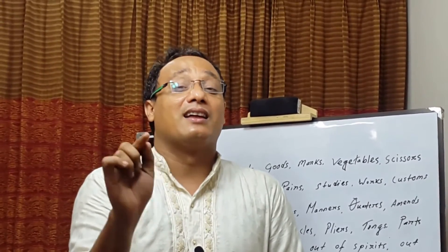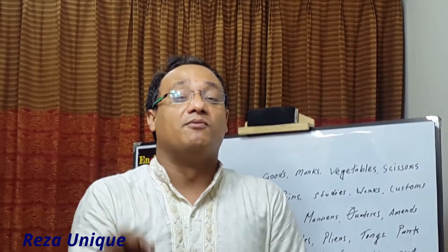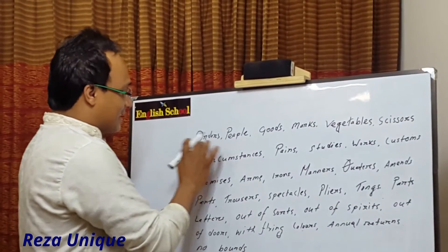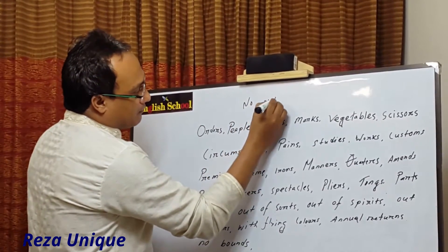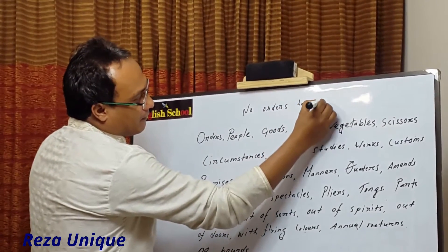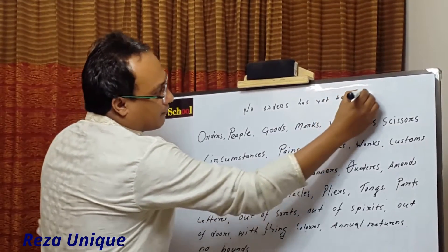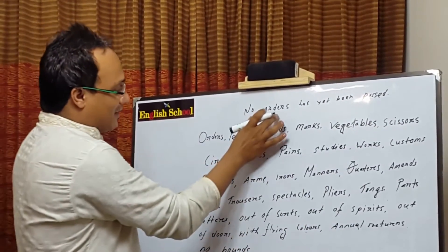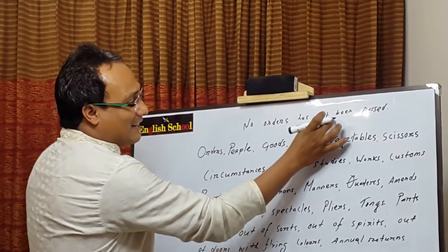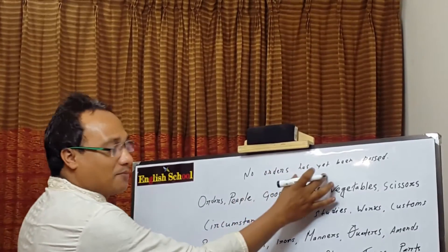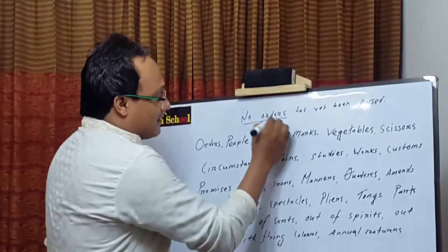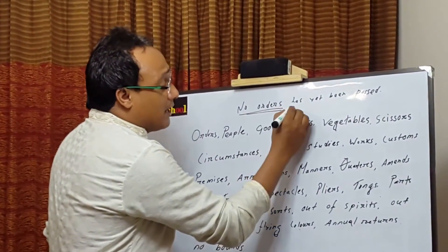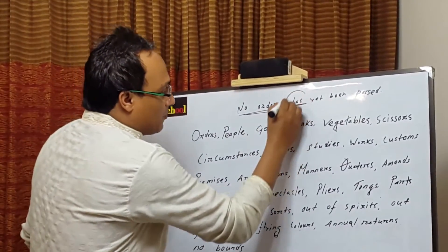When we consider something as a plural noun, we have to use the plural form of the verb. Follow here — the first one is 'orders.' If we go through an example: 'No orders has yet been passed.' We usually make this kind of mistake — we consider 'no orders' as singular, but it is not singular. As it is plural, we have to use the plural form of the verb. It must not be 'has'; it should be 'have.'